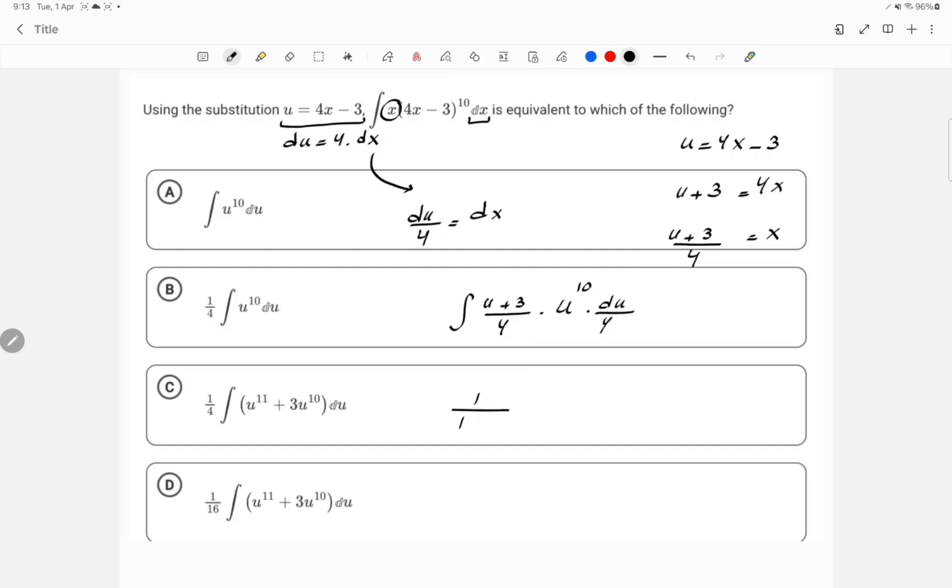So you're going to have 1 over 16 placed on the outside, and you're going to have u plus 3 times u to the power of 10 du.